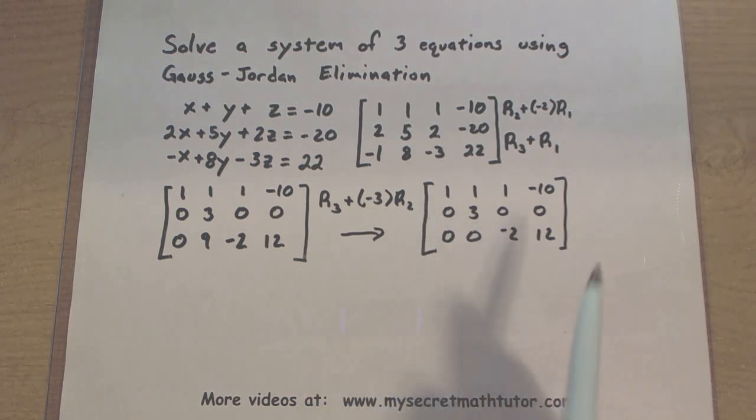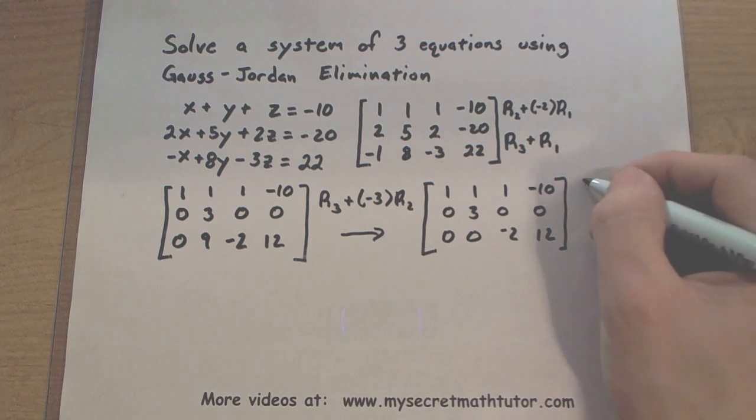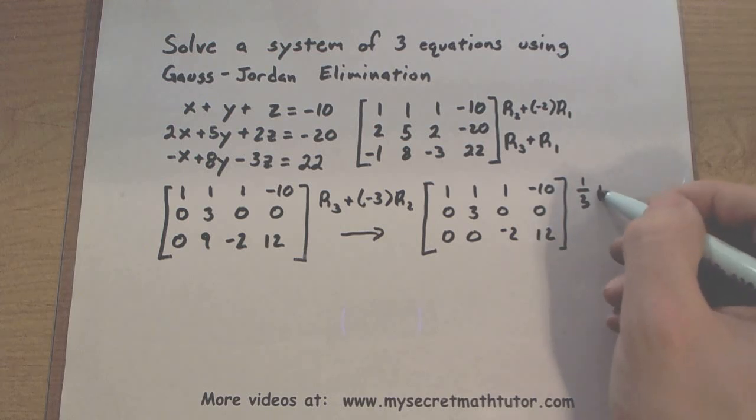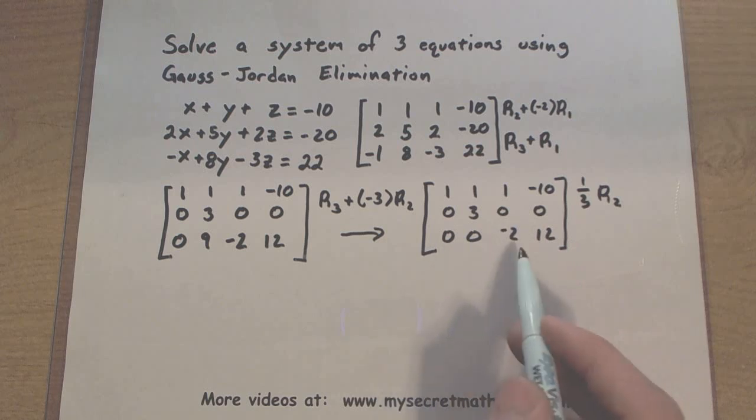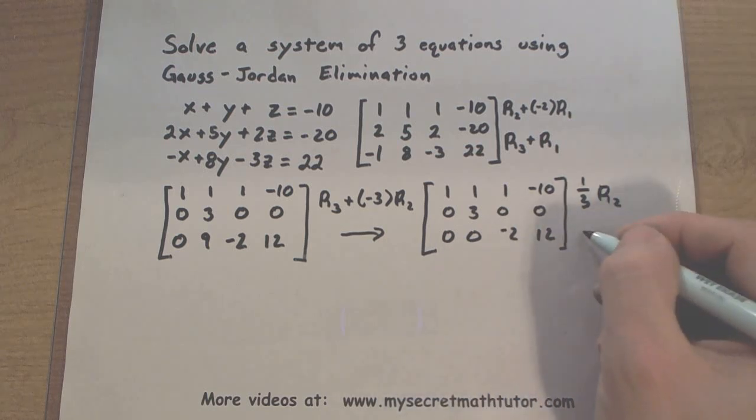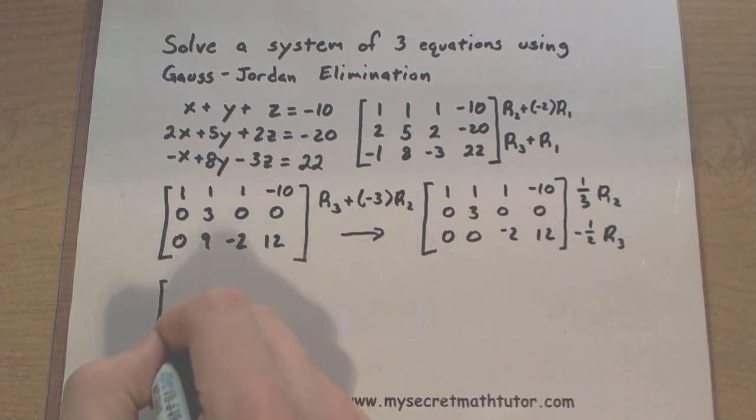And now we want to go ahead and change these guys into 1s, which we can do if we just take the entire second row there and multiply that by a third. And we'll take this entire row, try and get a 1 right there, by multiplying by a negative 1 half.